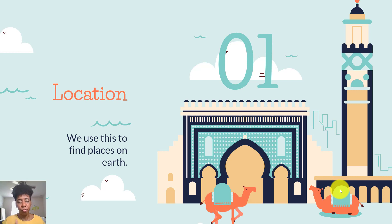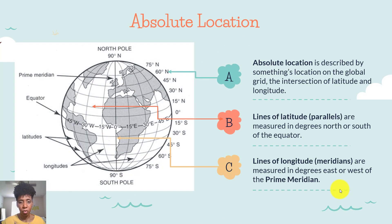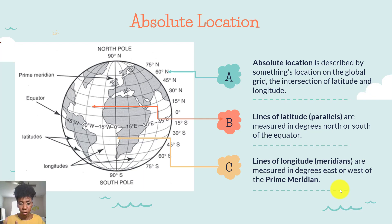So the first thing we're going to look at — if you remember your five themes of geography — the first one is location. We use this to find places on the earth. We have to know where we're going. The first concept is absolute location, which is basically the exact precise measurement of where something is located on the global grid or on the planet. We use different intersections of that grid to determine where land masses are.